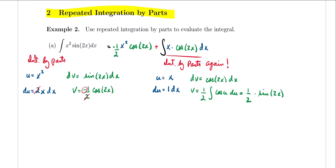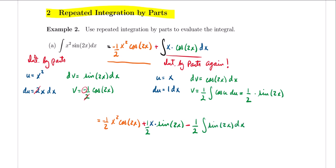Doing the integration by parts and carrying down the result from the first step — negative one-half x squared cosine of 2x — we get plus the result of the second integration by parts: u times v gives x times one-half sine of 2x, so plus one-half x sine of 2x, minus the integral of v du, which is one-half times the integral of sine of 2x dx. We have one more integral to solve, but this one doesn't require integration by parts.